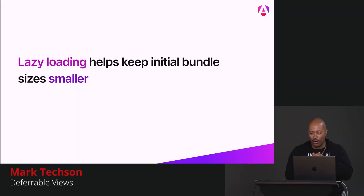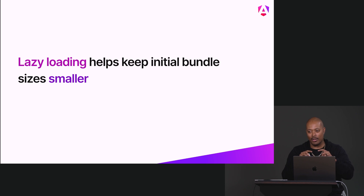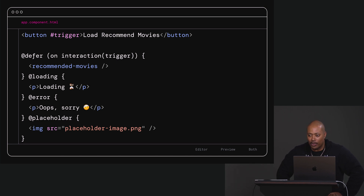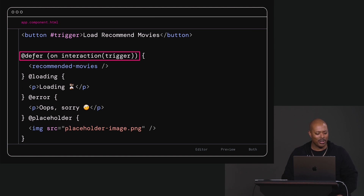Now, you may have done lazy loading before with fancy configuration at the router level where you say don't ship this route. But with deferrable views, you can take parts of your component's template and say 'don't ship this part until something meaningful happens' — and you do all that work in the template. Check out this template: I want to load the RecommendedMovies component only if someone interacts with the trigger. You use the @defer syntax — this defers the loading of whatever's in the block until the interaction happens.